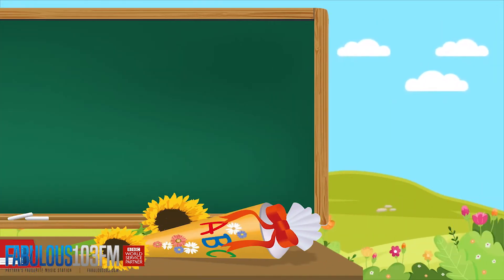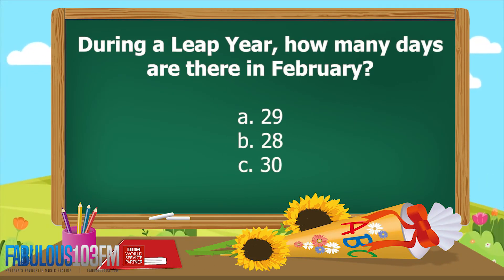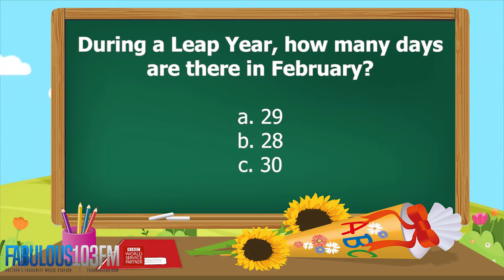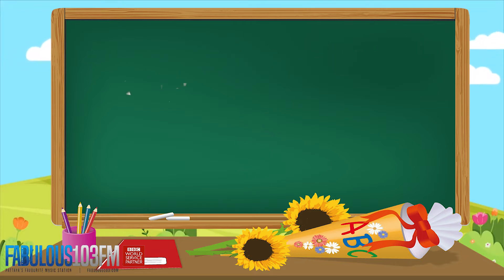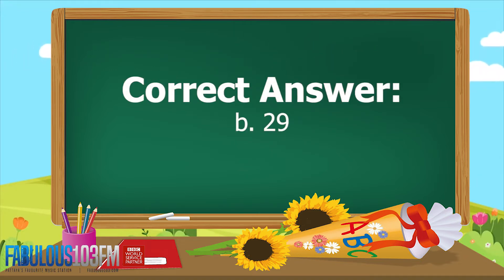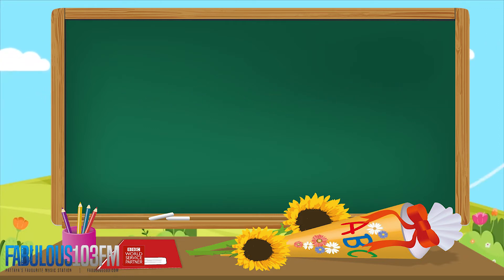So the first one was: during a leap year, how many days are there in February? Are there A, 29, B, 28, or C, 30? What did you think? Shout your answer at the radio as loud as you can. And the correct answer is 29. There are 29 days in February during a leap year.